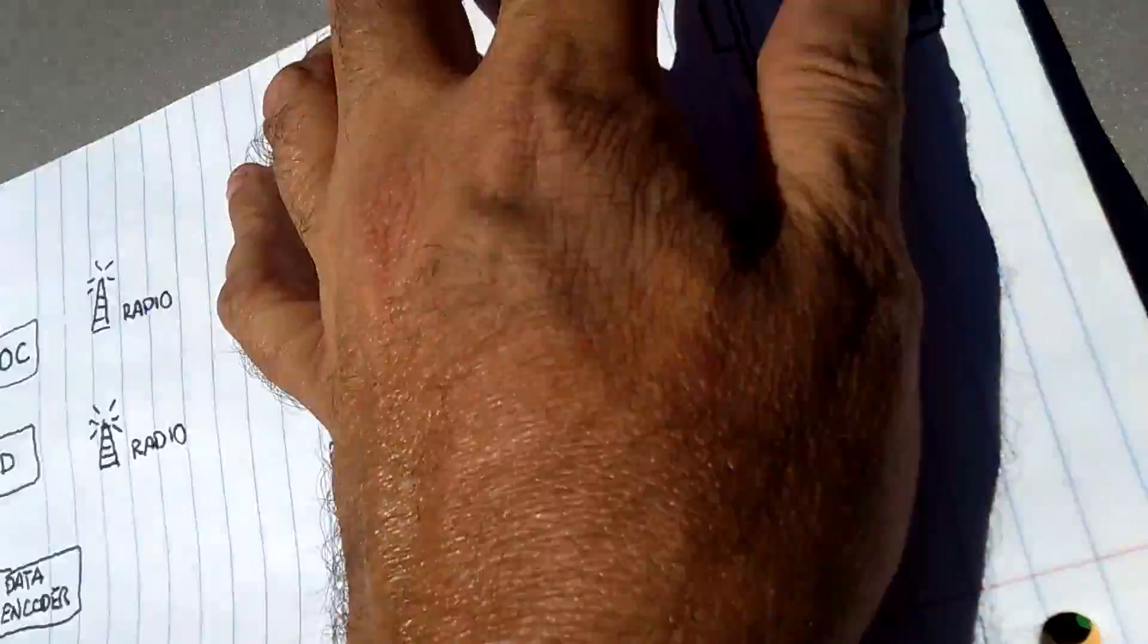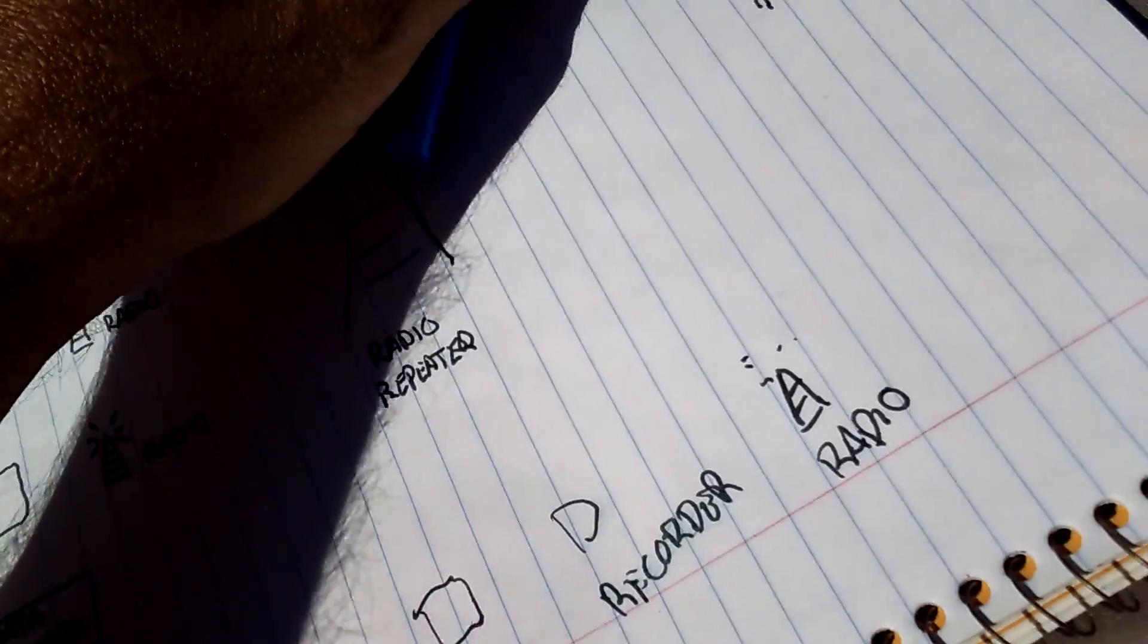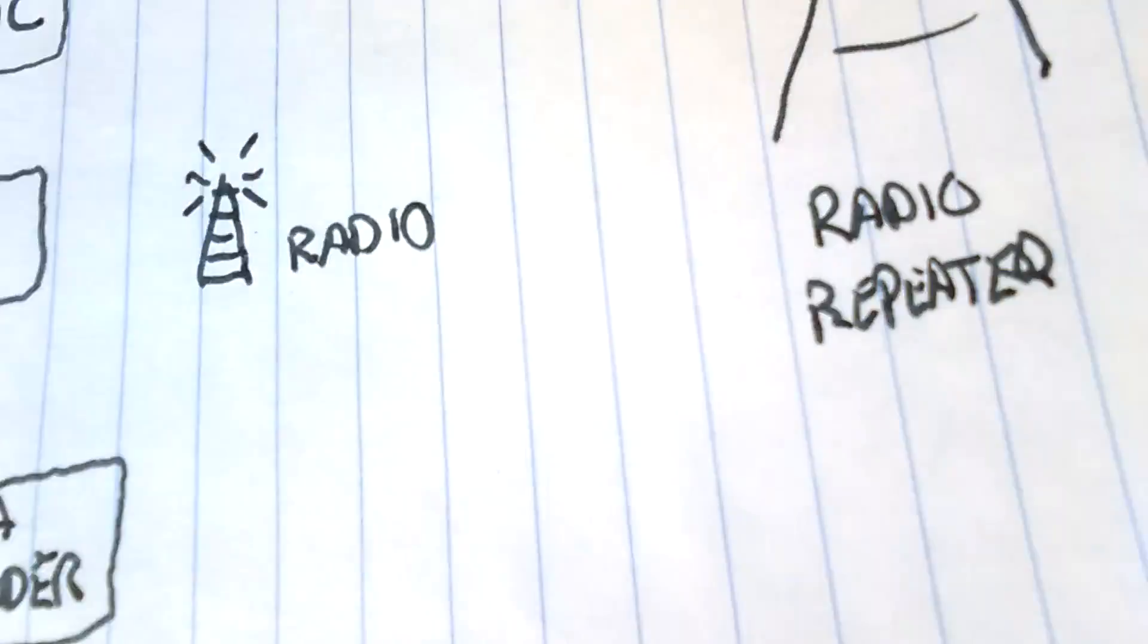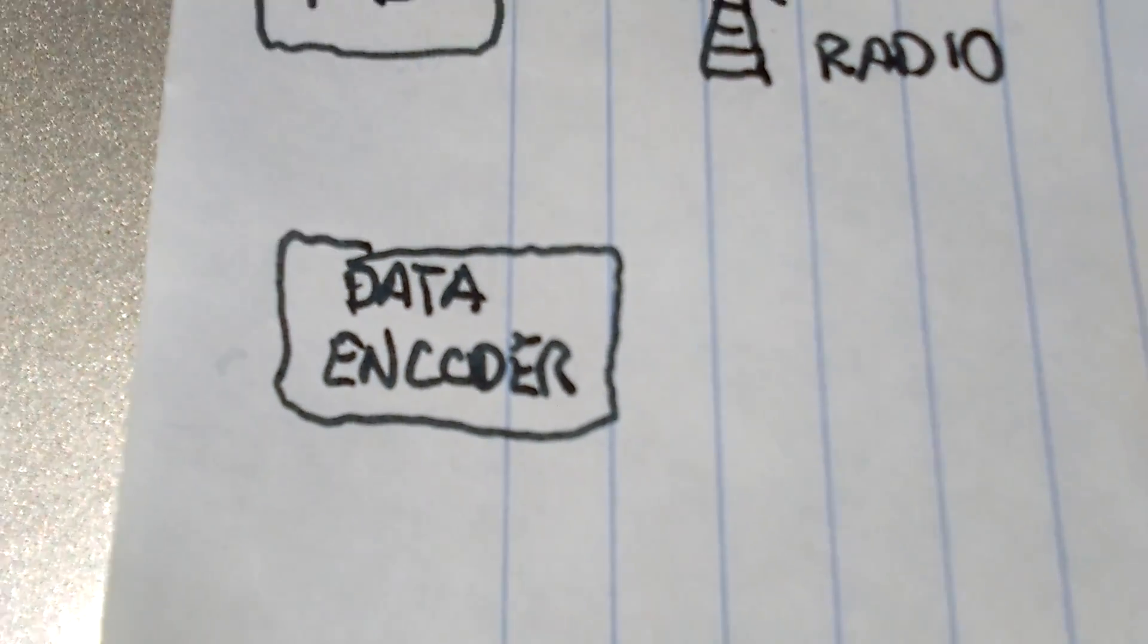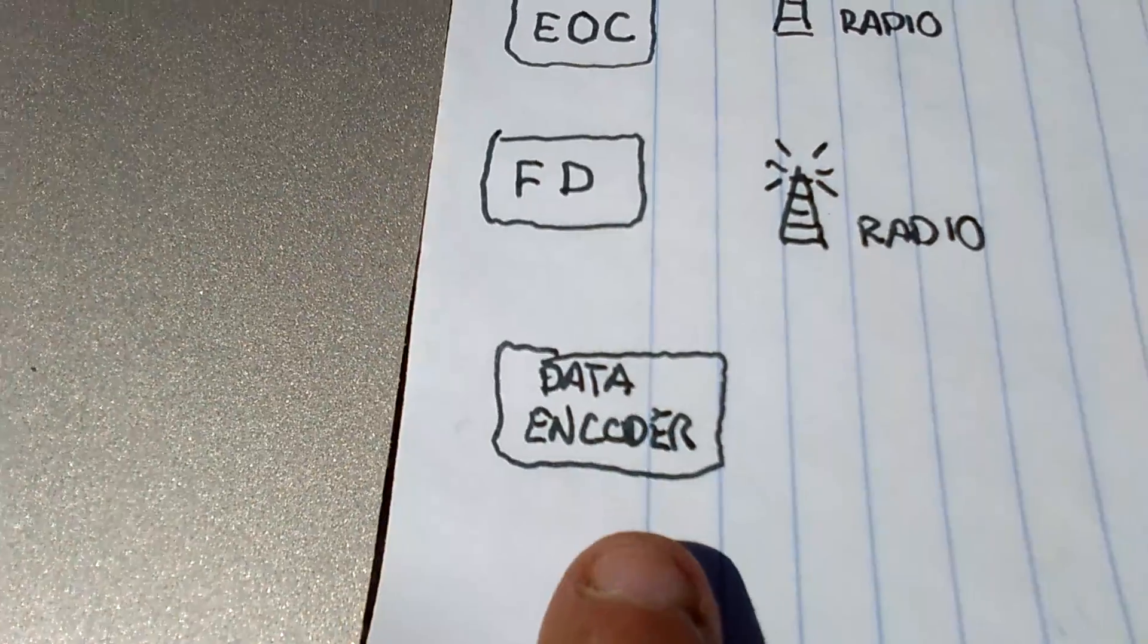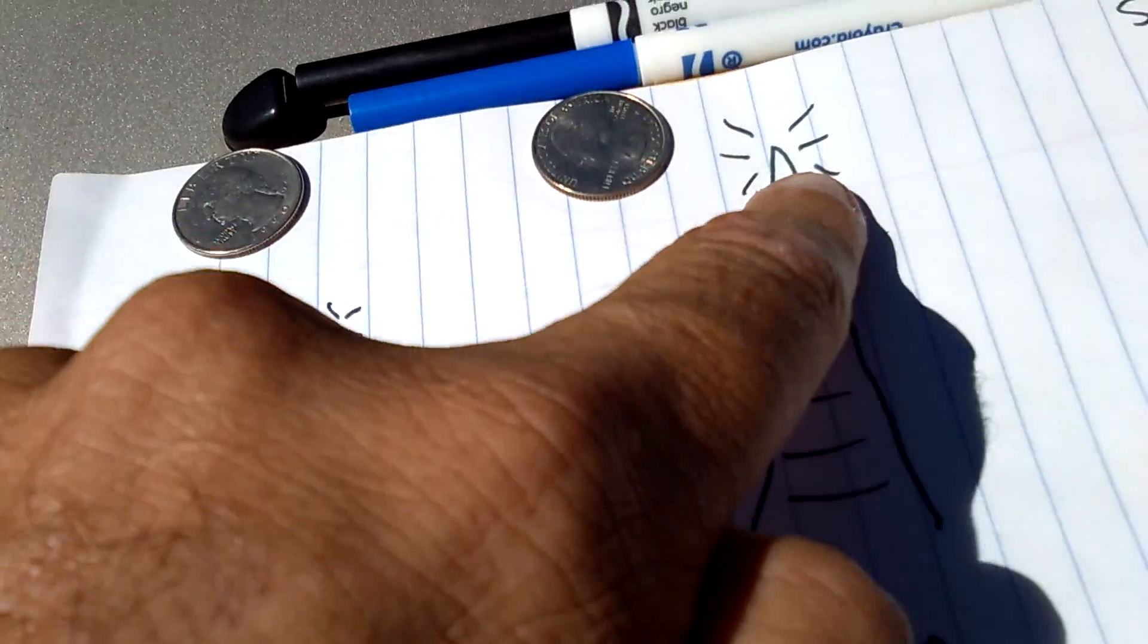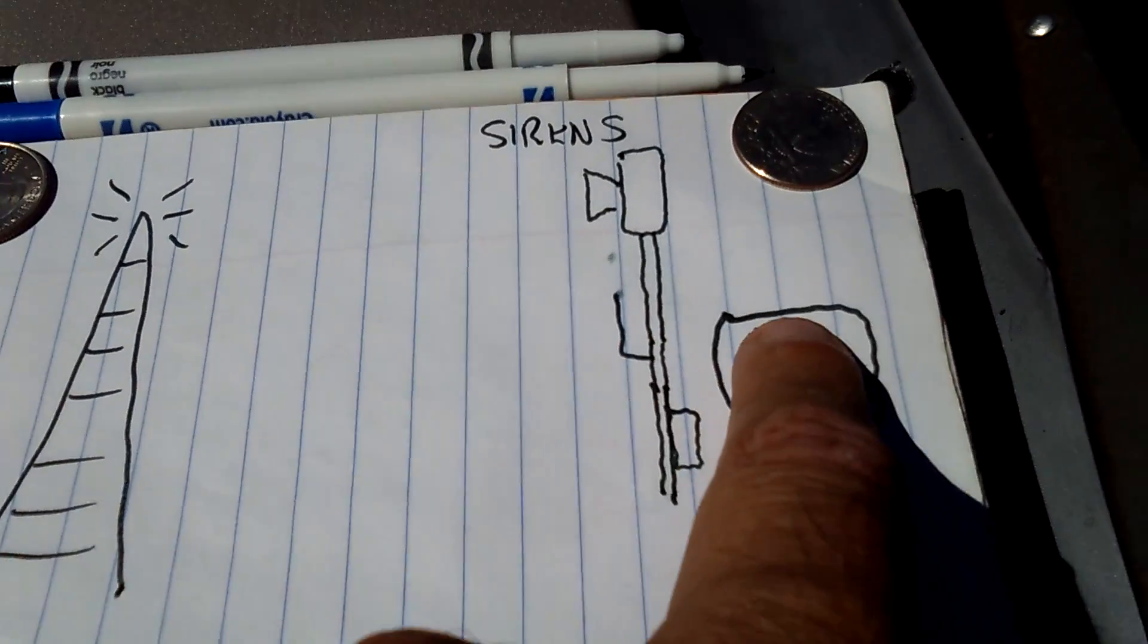What happened on Wednesday is that the county EOC or the fire department wants to test the sirens. They use a data encoder and a radio. These radios go to the main repeater. The repeater has a very strong signal, or it probably has more than one repeater around the county, which goes to the sirens.